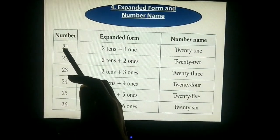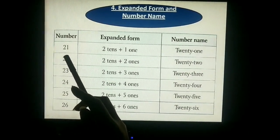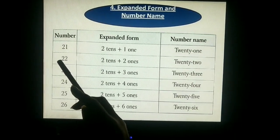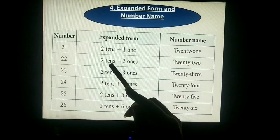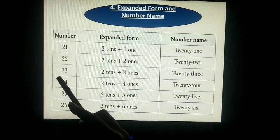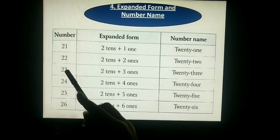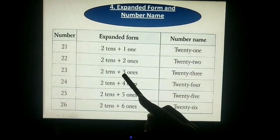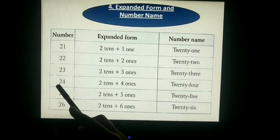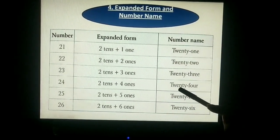Similarly, the next number — ones place: 2, tens place: 2. Expanded form: 2 tens plus 2 ones. Number name is 22. Next: ones place 3, so 2 tens plus 3 ones — number name is 23. Next: 2 tens plus 4 ones — number name is 24.